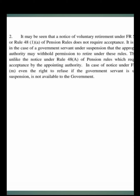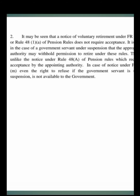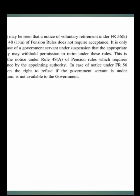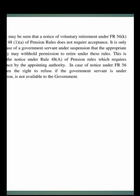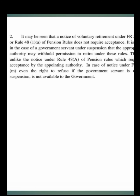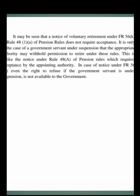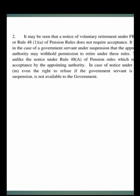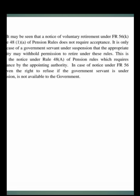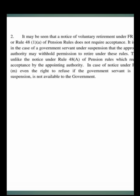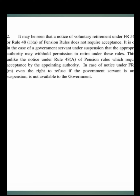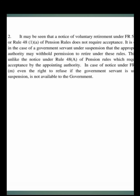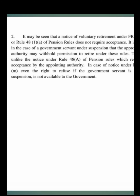It may be seen that a notice of voluntary retirement under F.R. 56K or Rule 48A of Pension Rules does not require acceptance. It is only in the case of a government servant under suspension that the Appropriate Authority may withhold permission to retire under these rules. This is unlike the notice under Rule 48A of Pension Rules, which requires acceptance by the Appointing Authority. In the case of notice under F.R. 56M, even the right to refuse when the government servant is under suspension is not available.